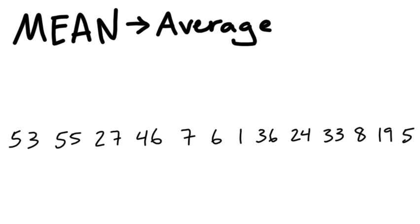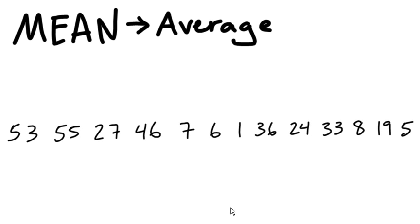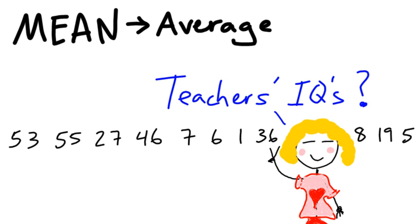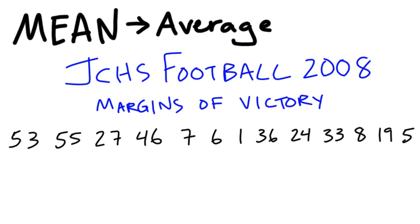If we just took a slew of data here — a bunch of different numbers — what do you think these numbers are? Teachers' IQs? No, they aren't that. Maybe some of the football players recognize these numbers. These are the margins of victory for the state champs this year. Game one of the year, they beat Highland Park by 53. Next game is 55-27, all the way to the state championship game, which was five.